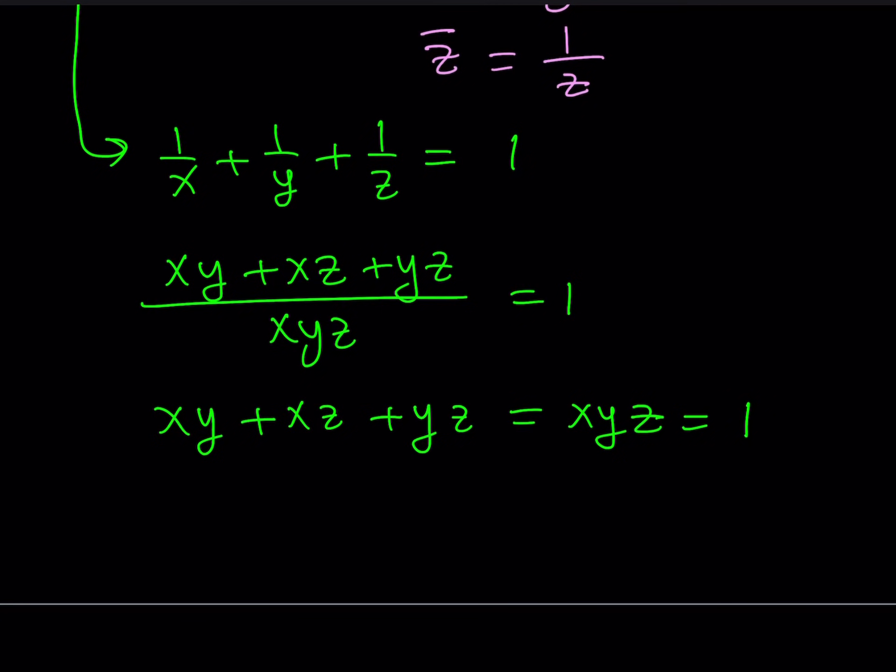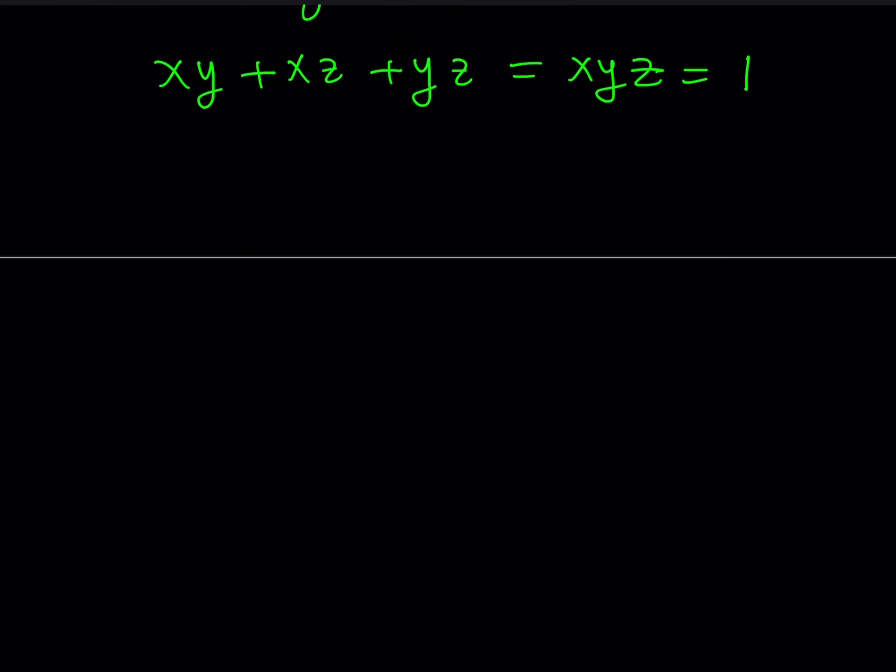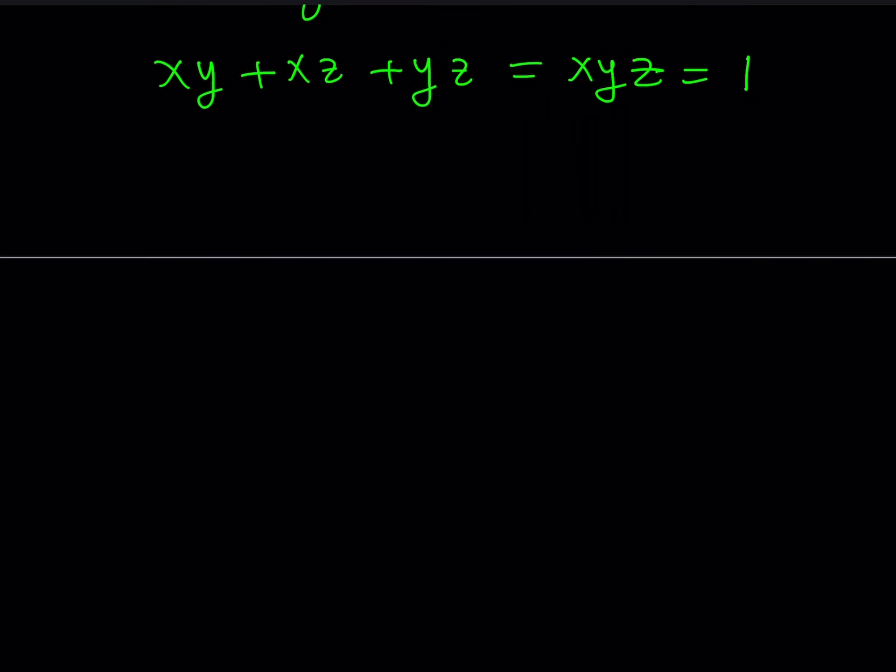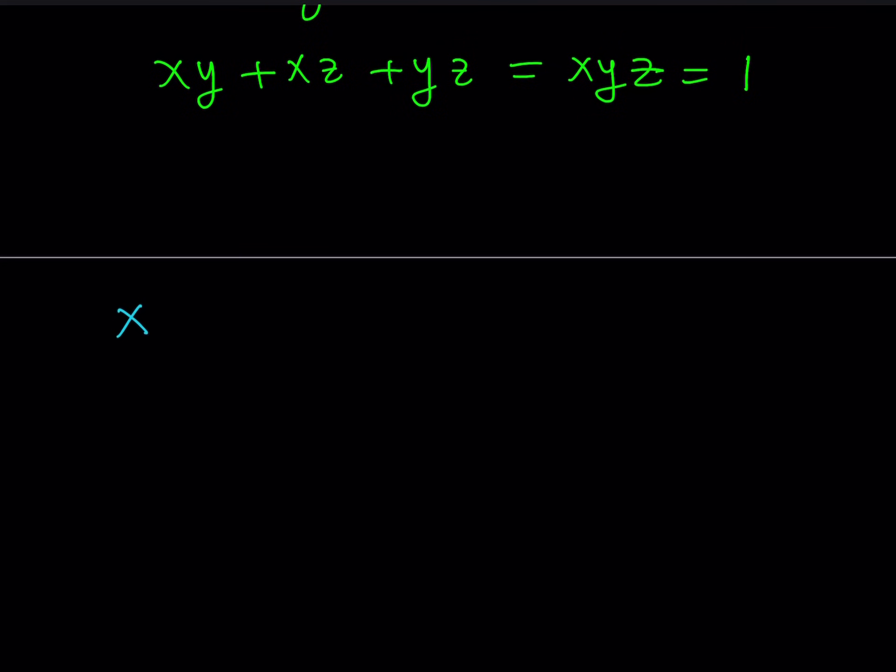What else do we know? Well, we also know that X plus Y plus Z is equal to 1. So let's go ahead and put it all together and see what it means. I got a nice system. My system is made up of XY plus XZ plus YZ equals 1. I got X plus Y plus Z equals 1. And I also got XYZ equals 1. So this is kind of like a nice system in three variables and we have three equations. I can use Vieta.